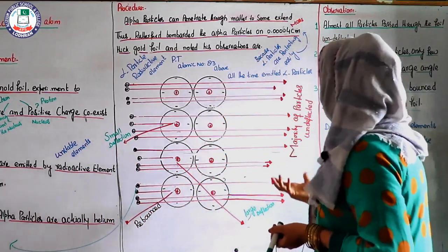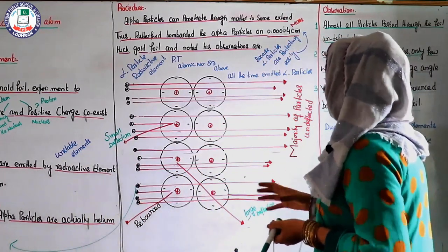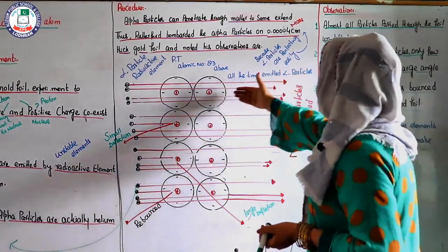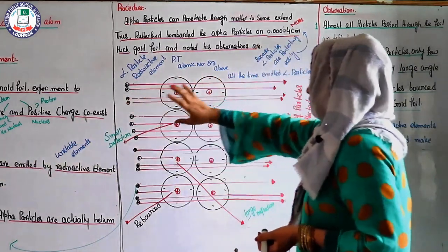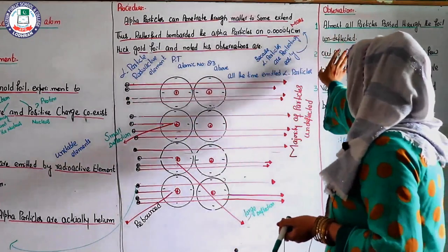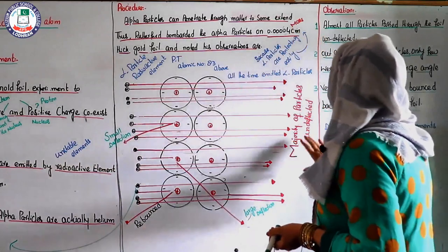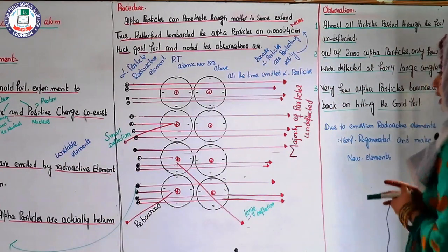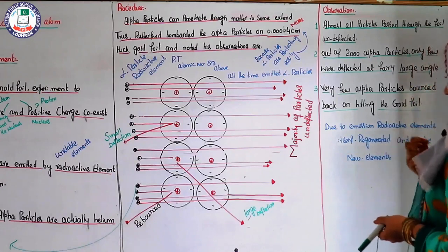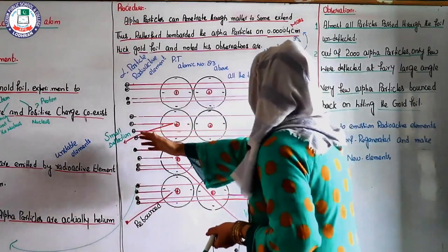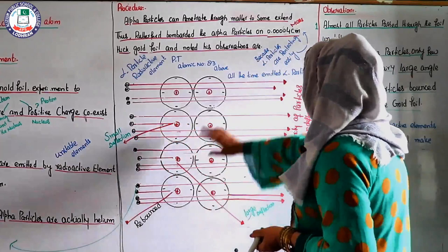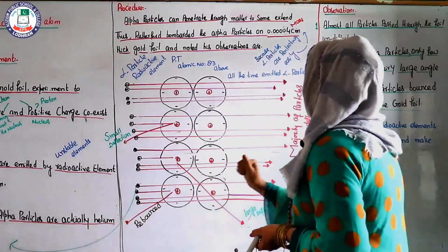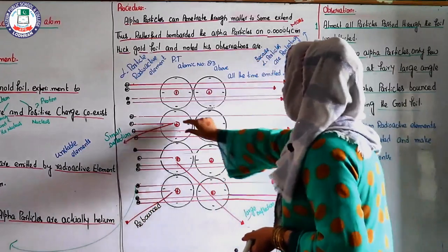Rutherford showed us that if we have electrons and protons, how they can coexist in an atom — where electrons are present and where protons are present. He considered the entire atom in the form of the gold foil with thickness 0.0004 cm, so alpha particles could easily penetrate. The majority of particles were undeflected. Of those that interacted, some showed small deflection, some large deflection, and some rebounded. In all three conditions, the nucleus of the atom is involved.